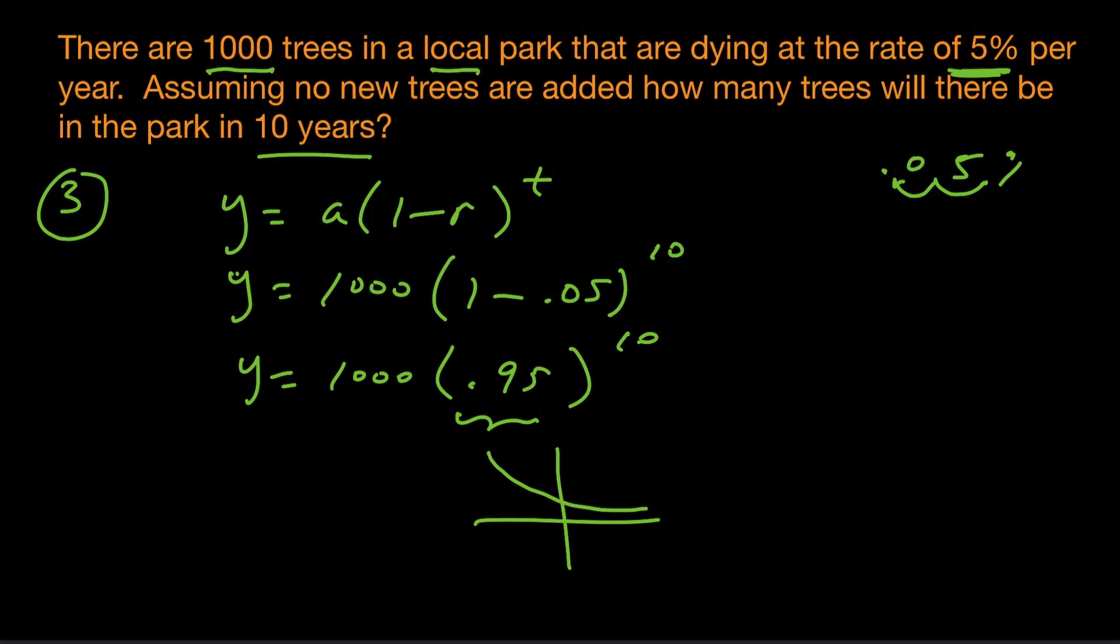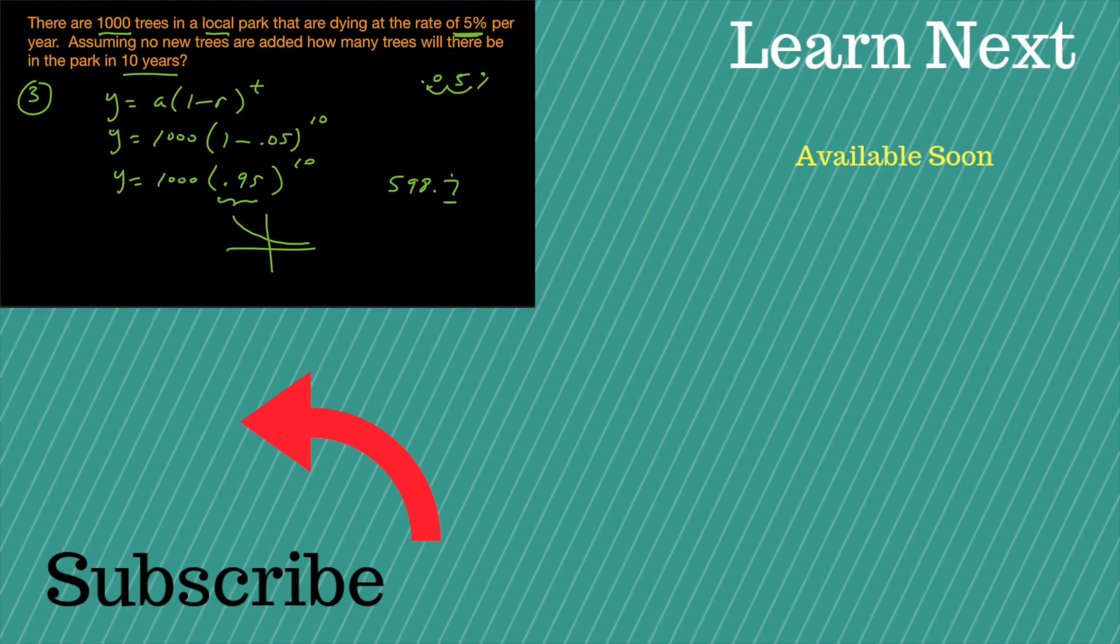I'm getting 598.7. But of course, we're dealing with whole trees here, not parts of trees. So because 0.7 is 5 or higher, we're going to round up. So it's going to be approximately 599 trees that are left in this park here.